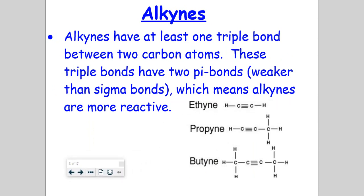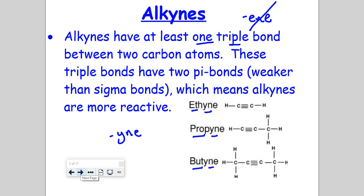Now alkynes — alkynes have at least one triple bond. So here we see that there are triple bonds; these again refer to pi bonds, and we'll get to that later in our next unit. The naming is similar in that you keep the root 'eth' for two carbons, 'prop' for three, and in this case 'but' for four carbons, but the ending changes from '-ane' — your saturated alkane — it's not '-ene' either because it isn't an alkene; it has a triple bond, so it's an alkyne. Our suffix is going to be Y-N-E, as we see here. We'll get more into examples involving nomenclature in just a moment.